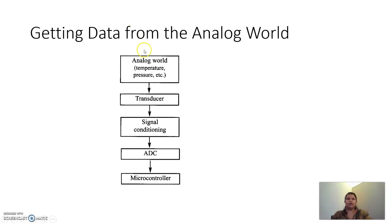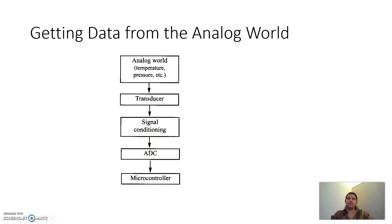From the real world, we collect temperature, pressure, light intensity, velocity, and all such data. This is fed as input to a transducer, which produces output in various forms — current, voltage, or resistance. That output is signal-conditioned and sent to the ADC, which converts the voltage into digital form and gives it as input to the microcontroller.